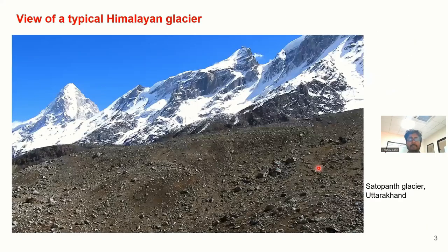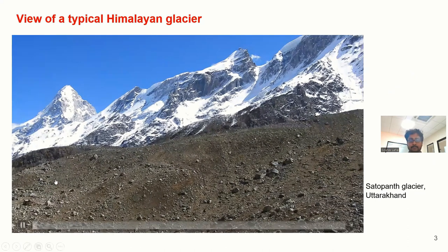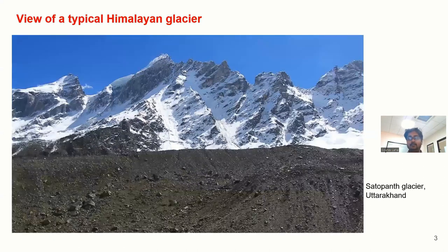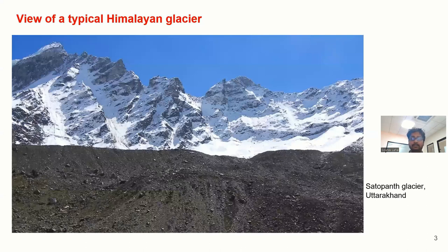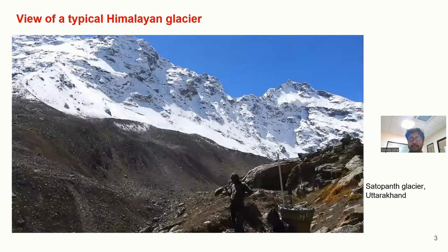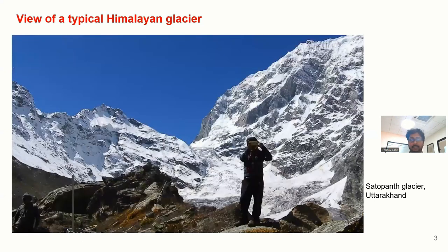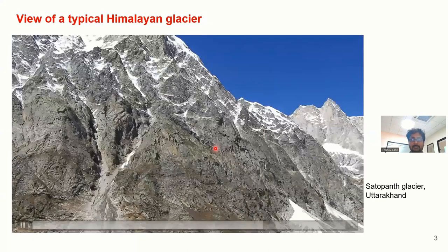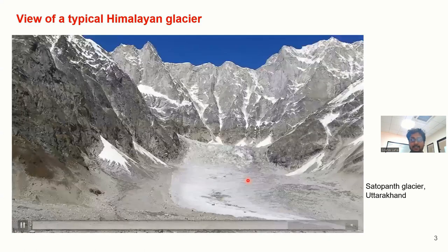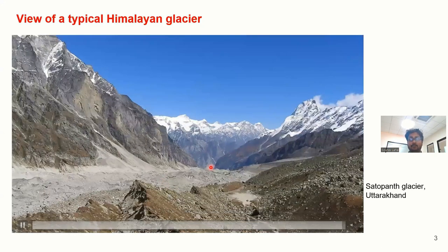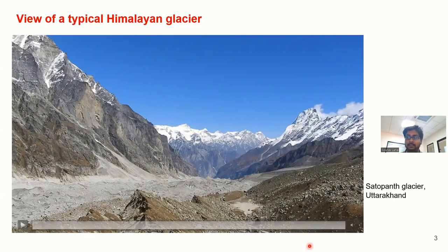Now we'll look at the typical view of a Himalayan glacier. This is the Satapanth glacier in Uttarakhand. This glacier is surrounded by steep headwalls and sidewalls. I took this video while doing field experiments there, where some people went to that glacier and we performed field measurements together. This is the headwall of the Satapanth glacier — it is one of the tributaries — and the glacier is flowing along this direction.